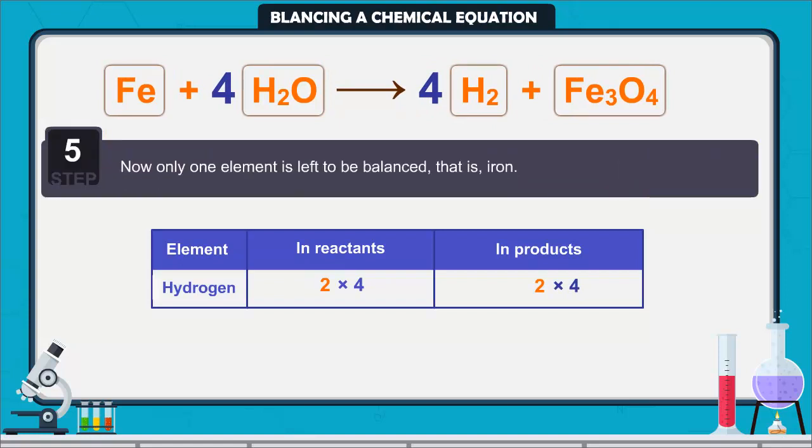Step 5. Now only one element is left to be balanced, that is iron. To equalize Fe, we take three atoms of Fe on the left hand side.